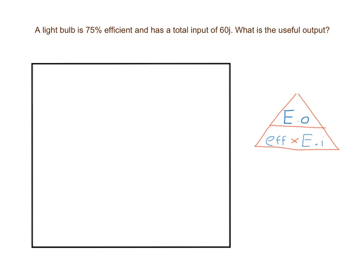With any physics style exam question that involves maths, it's a good idea to go through the question and pull out the most important piece of information. So, we've got a light bulb that's 75% efficient and has a total input of 60 joules of energy. So therefore, the first part there is this 75% efficiency, that's very important for us, and the second most important part for us is this total input energy of 60 joules.